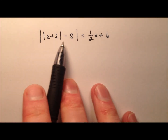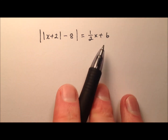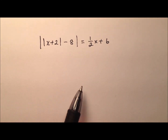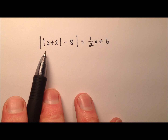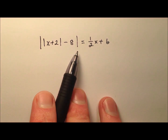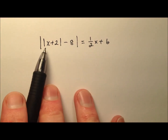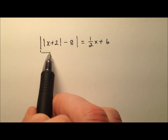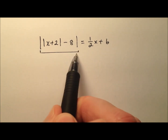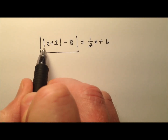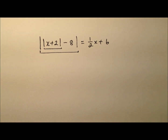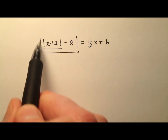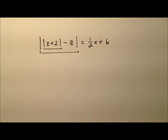In this example, we're going to solve this absolute value equation, but you'll notice it's not just one absolute value — we have a nested absolute value expression. So we have an outer absolute value expression, and inside that we have another one. We're going to tackle this by dealing with the outside one first, and then the inside one.